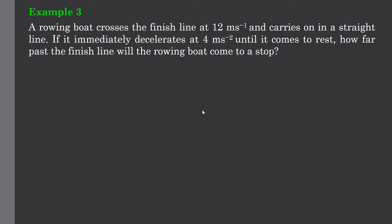Example 3, a rowboat crosses the finish line at 12 meters per second. It's the end of the story. Actually it might continue as a start, and carries on in a straight line. If it immediately decelerates at 4 meters per second per second until it comes to rest, how far past the finish line will the rowing boat come to a stop? So this 12 meters per second is in fact the start of our story.